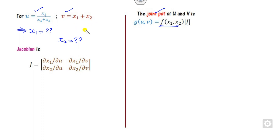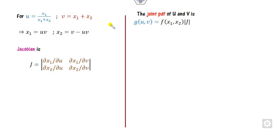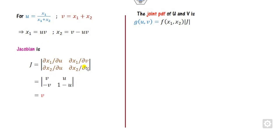If you multiply the transformations, you can see that uv is nothing but x1, meaning x1 = uv. Substituting this value, you can find x2. The Jacobian is then computed: the partial derivative with respect to u is v, and so on, giving you the Jacobian as shown.